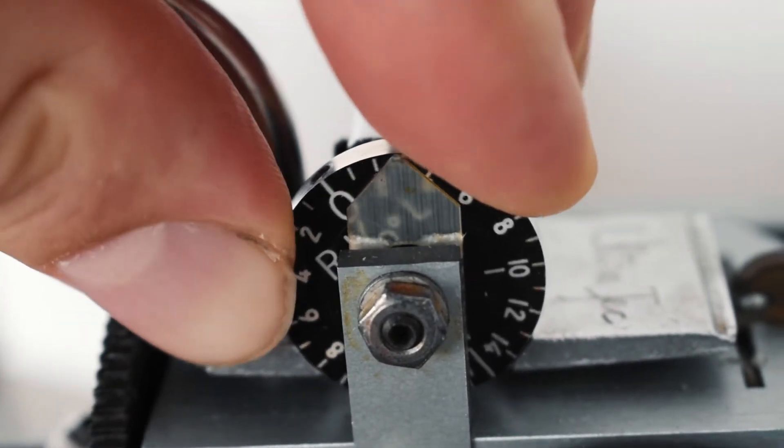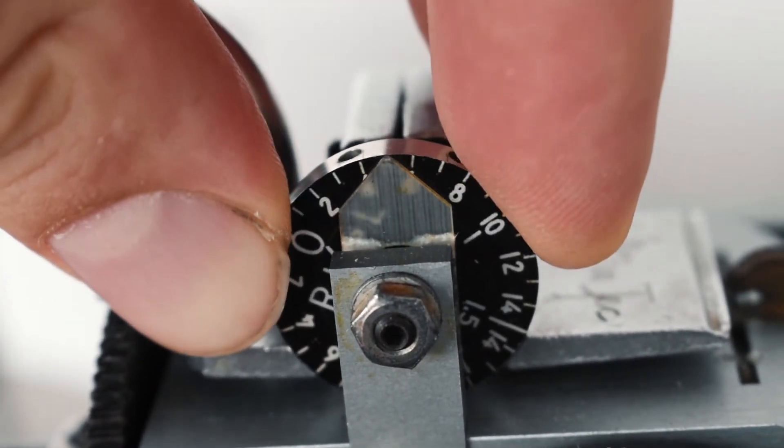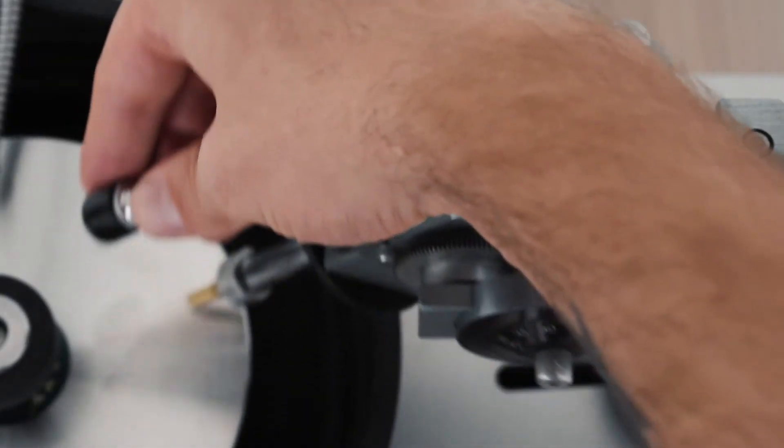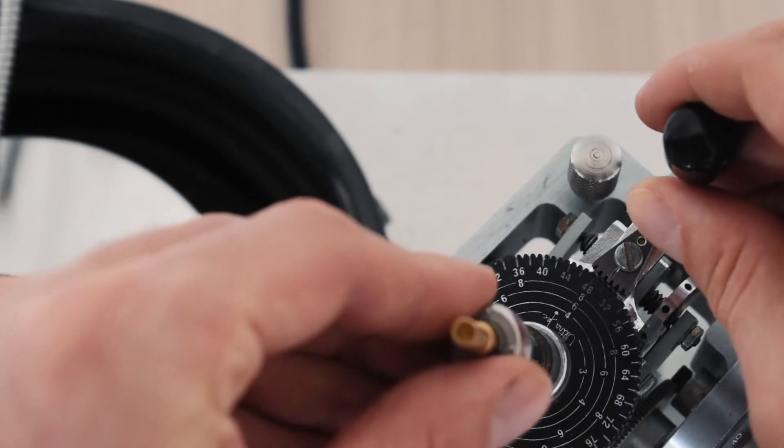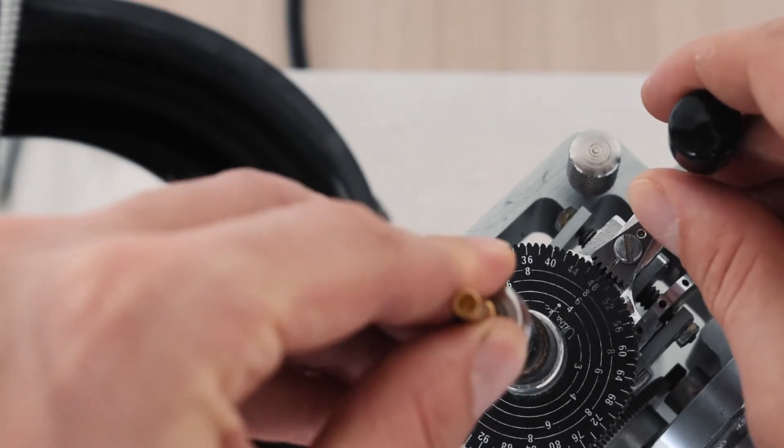The machine includes an easy-to-use cheater knob to help you micro-adjust the index wheel. The standard index wheel for this machine has 96 teeth, though different sized wheels are available from the company to be able to cut odd shaped designs.